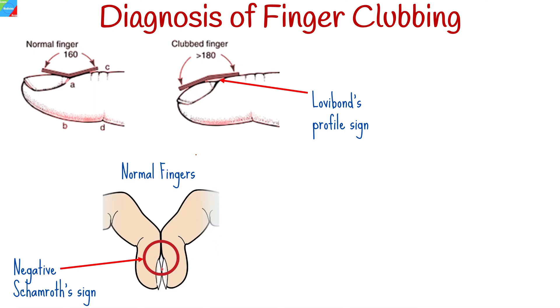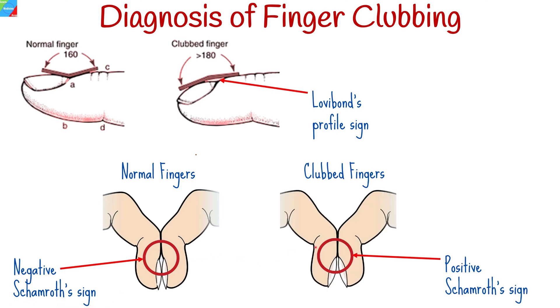The second sign is Schamroth's sign. When you place your hands together with the tops of your nails facing each other, the sharp angle between your nail bed and cuticle forms a tiny diamond-shaped hole. When this gap closes, it is referred to as Schamroth's sign.